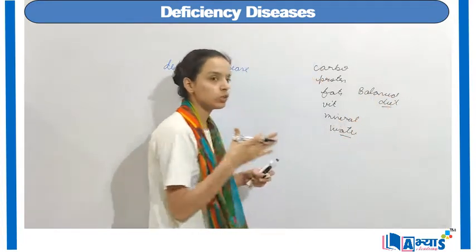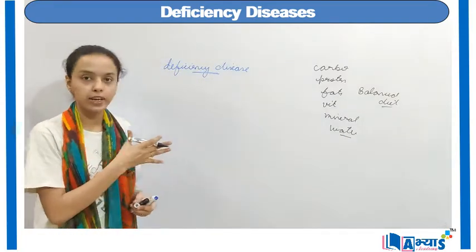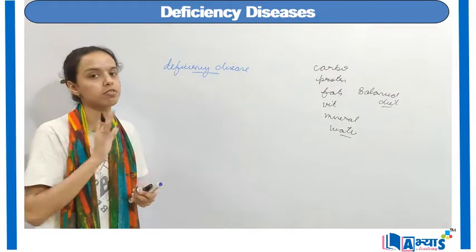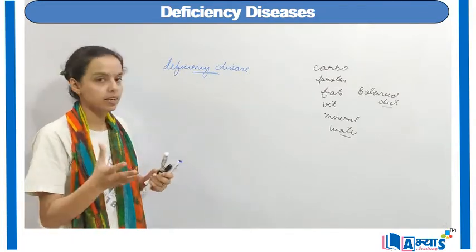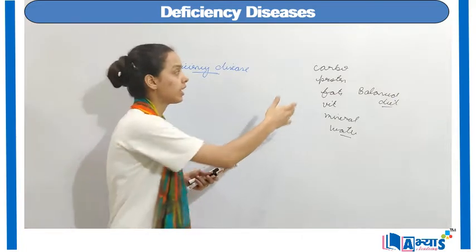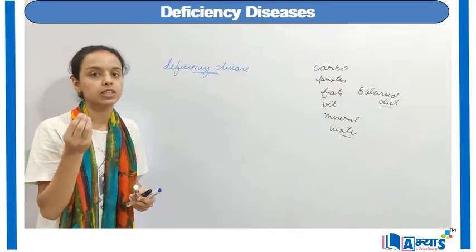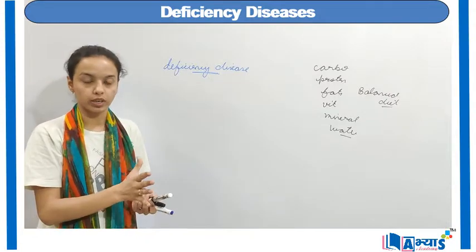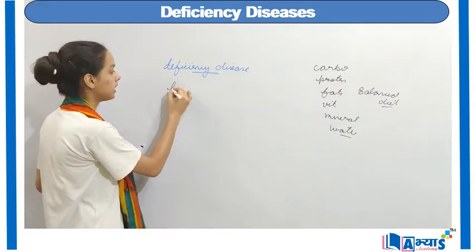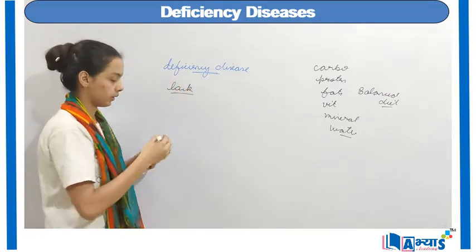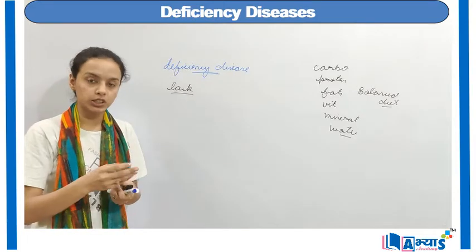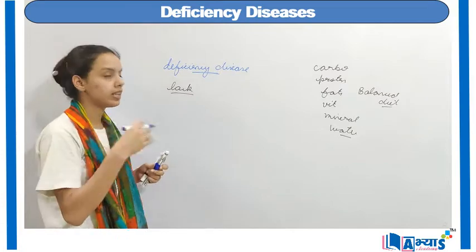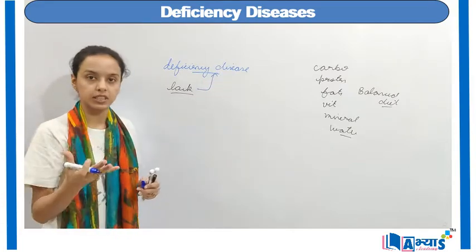You are requested to view my video on the balanced diet topic. I have discussed all the types of diets and the functions of the balanced diet. Now, if any one person is not taking the right quantity of any certain type of nutrients, then there is a deficiency of that nutrient, or we can say there is a lack of that nutrient. If there is a lack or deficiency of a particular nutrient in our body, then that disease is known as the deficiency disease.